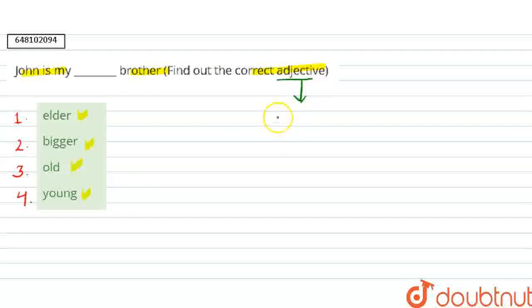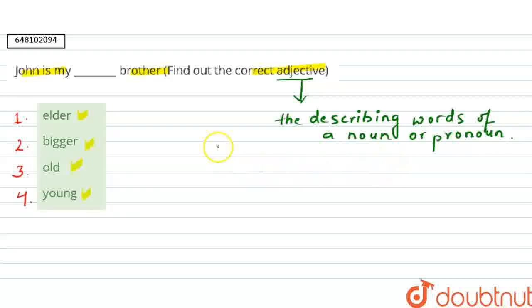An adjective is basically the describing words of a noun or pronoun. So basically adjective yaha pe wo words hote hain, jo ki hamein noun and pronoun ki vishishtahein bataate hain.